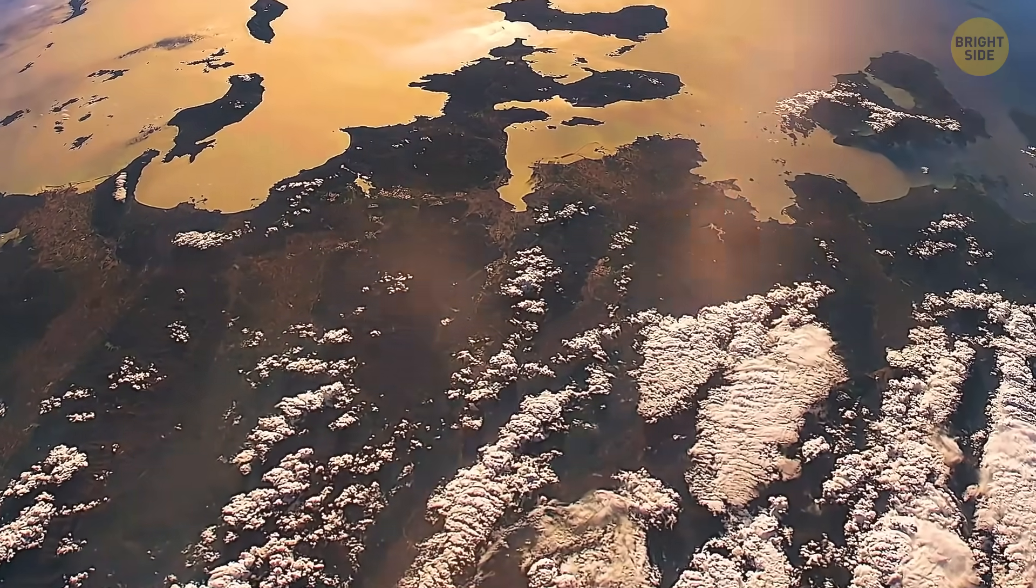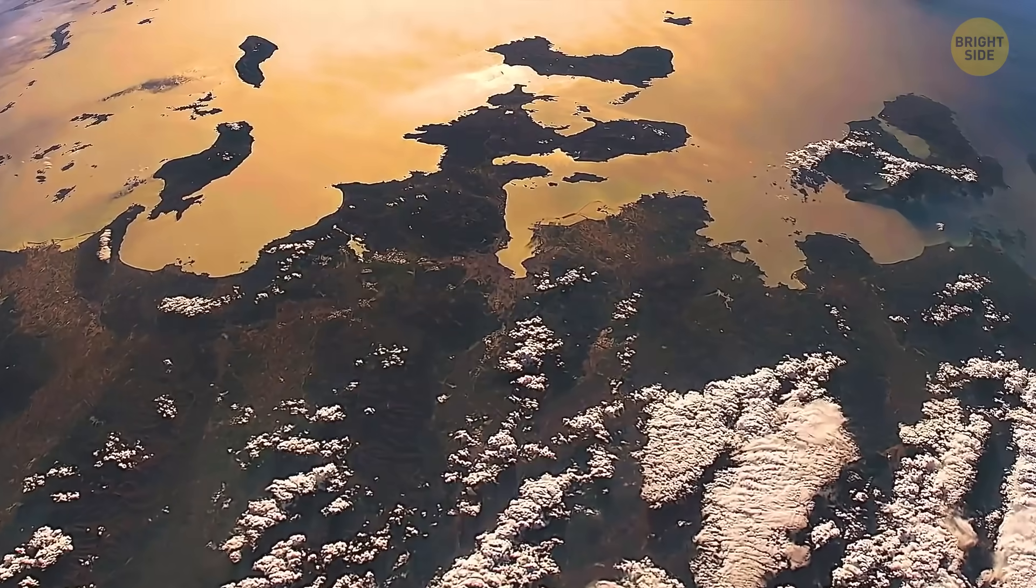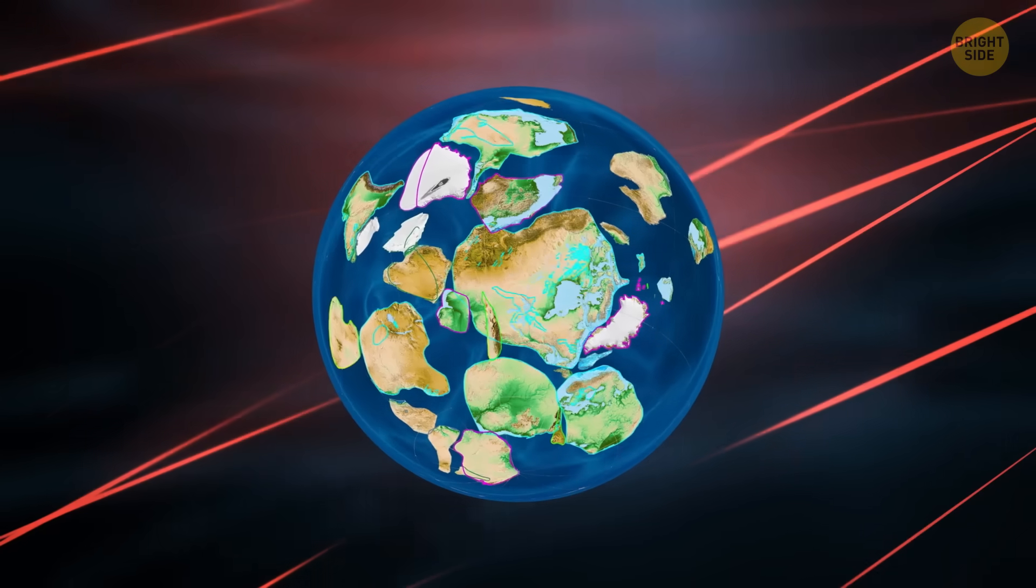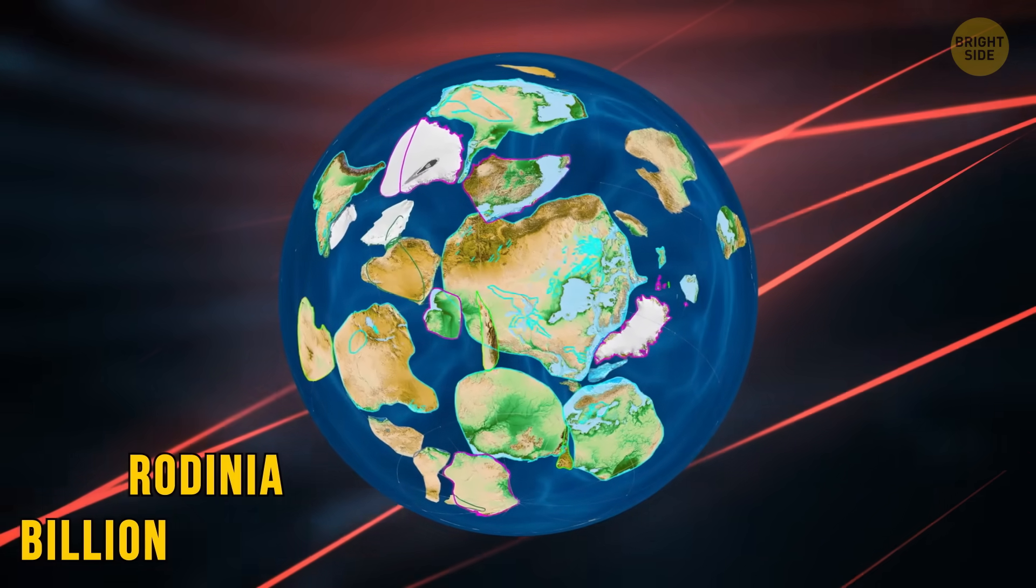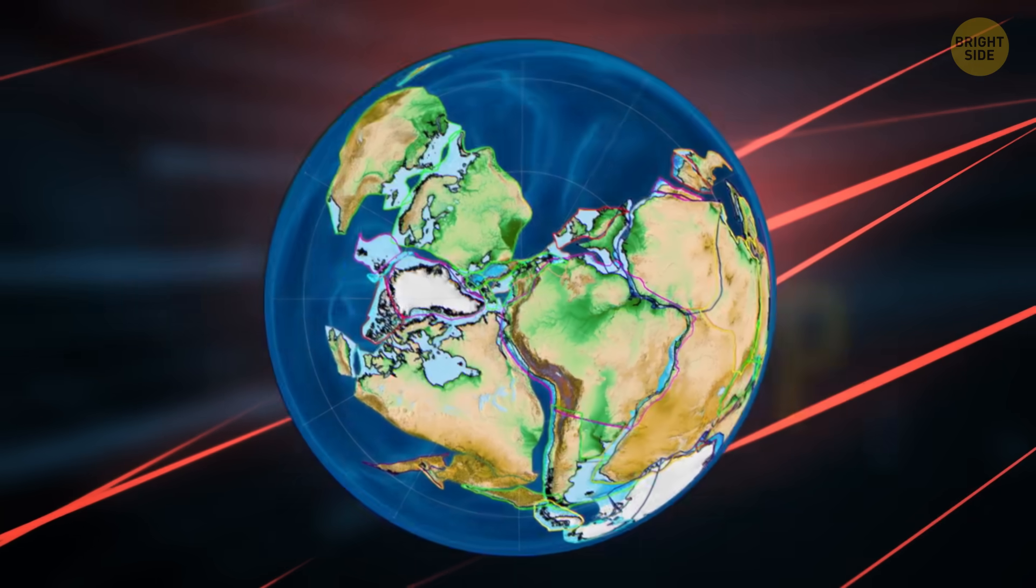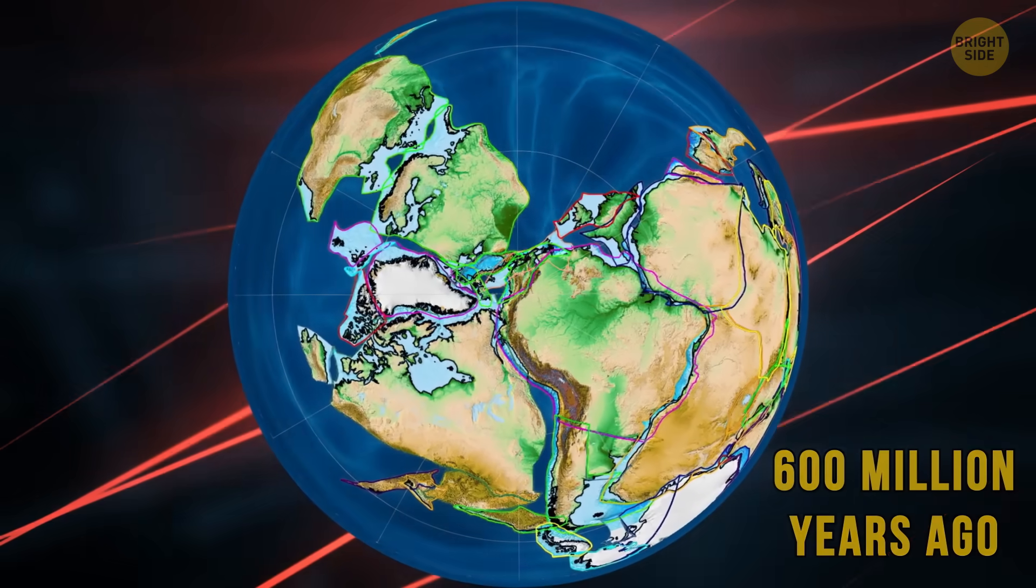As time passed, we learned more and more about our planet. We found out that the Earth used to have multiple supercontinents. Before Pangaea, there was a megacontinent called Rodinia around a billion years ago. And later on, Pannotia joined the scene about 600 million years ago.